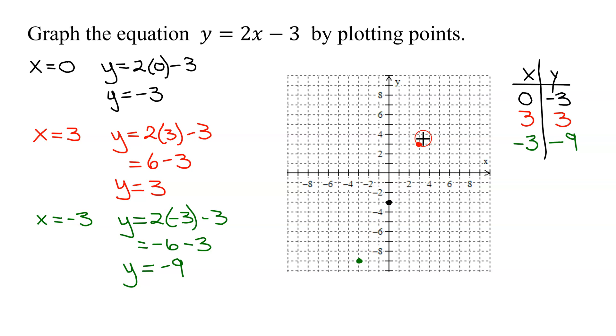These points look like they form a straight line. So let me see if I can just draw a straight line through them. I think that's pretty good. And remember when you draw a line, you always put arrows on both of the ends. So now I have graphed my line y equals 2x minus 3 by plotting 3 points.